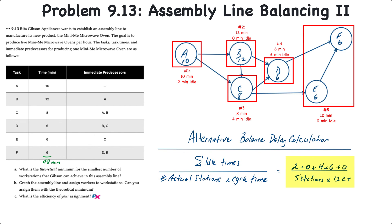So workstation 1 has 2 minutes of idle time, workstation 3 has 4 minutes of idle time, and workstation 4 has 6 minutes of idle time. That adds up to a total of 12 minutes. And if we take 12 minutes divided by 60, there's our 20% idle time or balance delay.